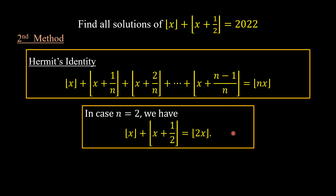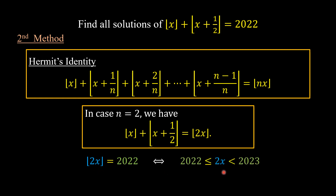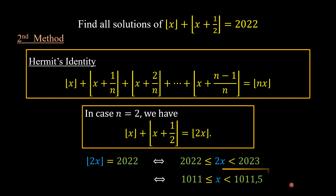Substituting this result into the equation, the floor value of 2x equals 2022, so 2x is between 2022 and 2023, giving x between 1011 and 1011.5. And there we got the solution from the second method, so we are done.